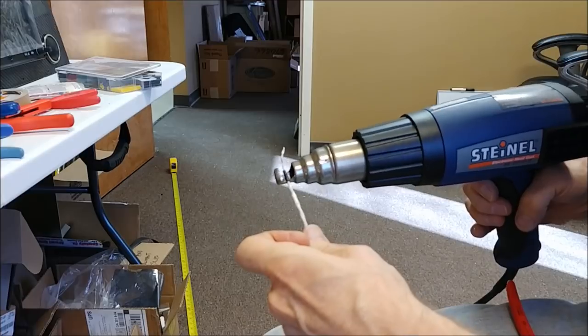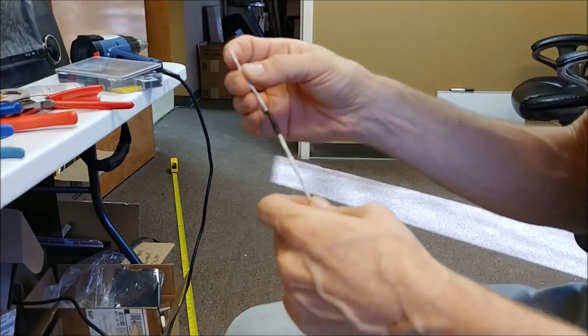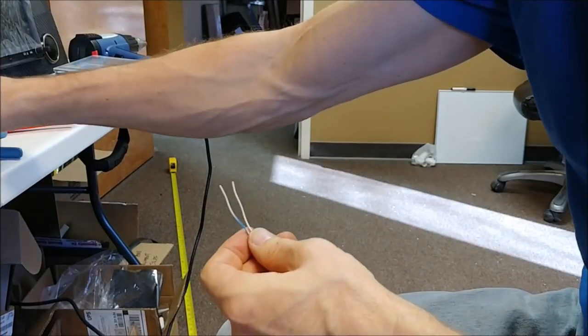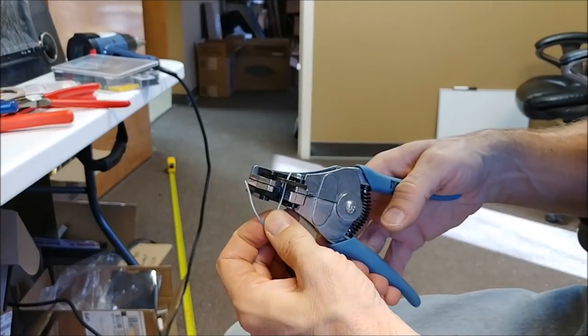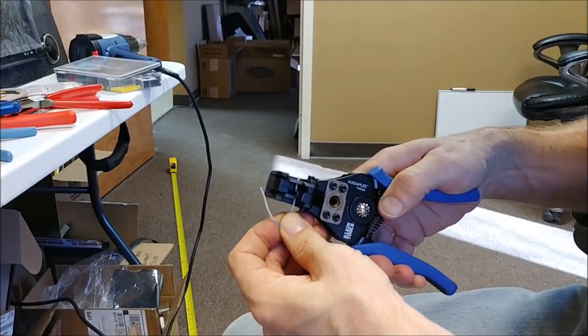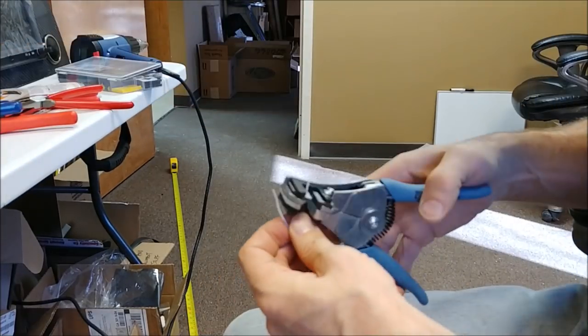Next thing is to bare the ends of the wires, and then we're using these little crimp-on connectors. We have a special tool for crimping them on. I've got two different strippers, and sometimes one works better than the other depending on the gauge, so it's good to have two different ones.